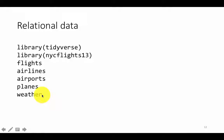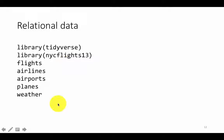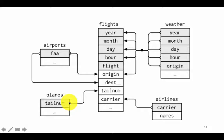You also have weather information for every single day of the year and by hour. For every hour, what was the weather? The weather information is for the origin airport — one of the three airports. So you have hourly information for each of those three airports about temperature, what the wind was like, whether there was rain, and all of that.